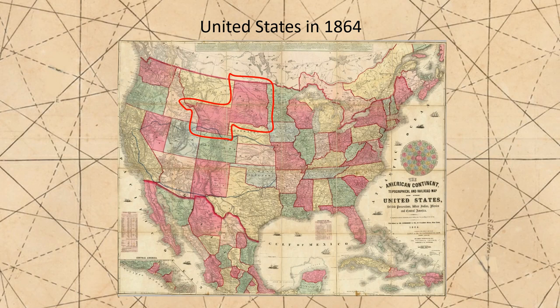This odd shape for Dakota was obviously impractical for a territory, so it was inevitable that Dakota would soon itself be reduced by taking the southwestern part of it and making it its own territory. Interestingly, this particular section of the American West had gone through more political changes than any other area west of the Mississippi River. From 1803 until 1865, portions of this section had been part of nine different territories.